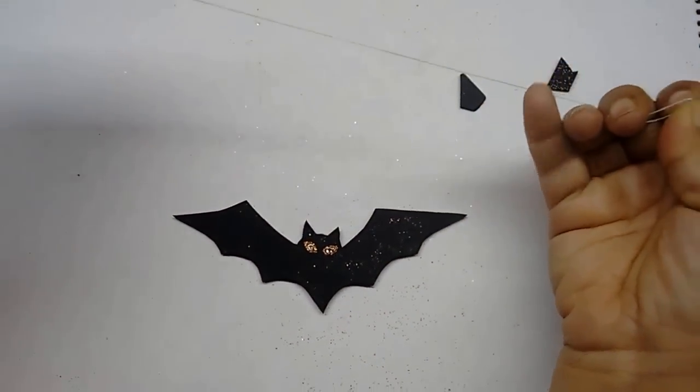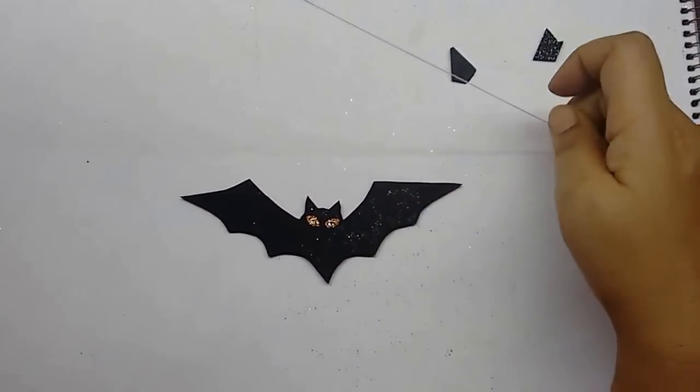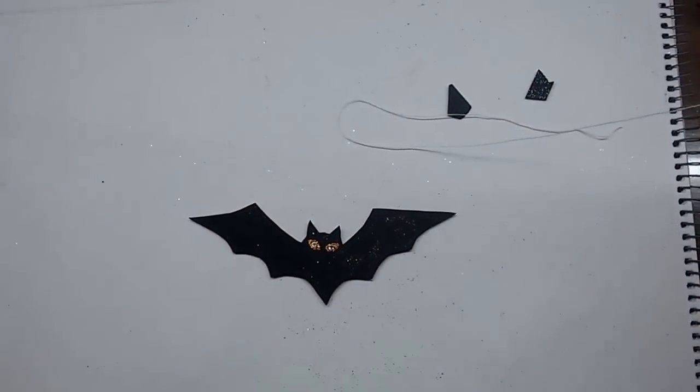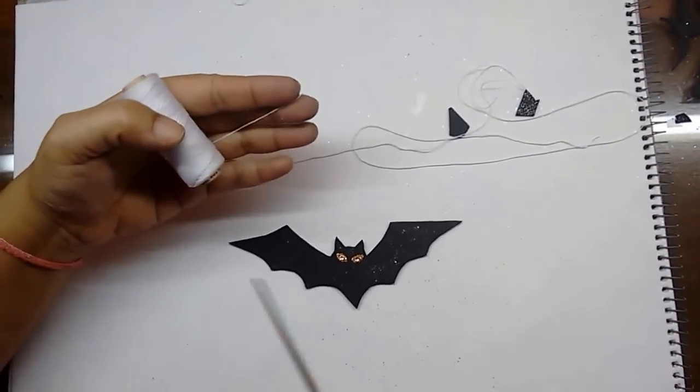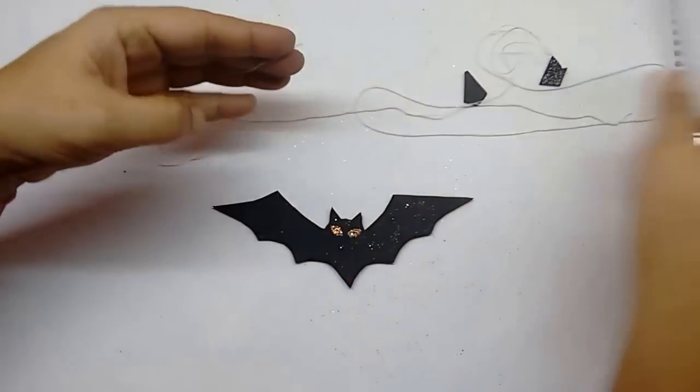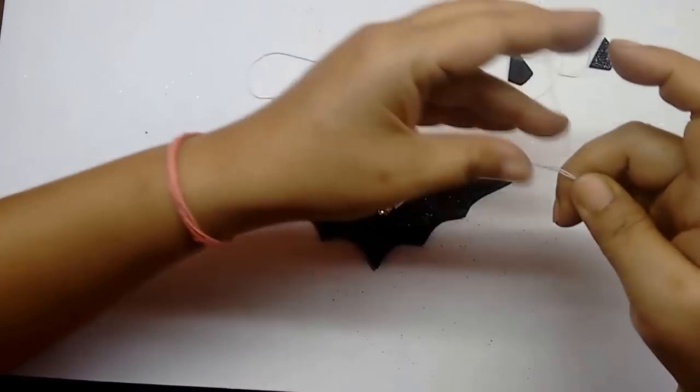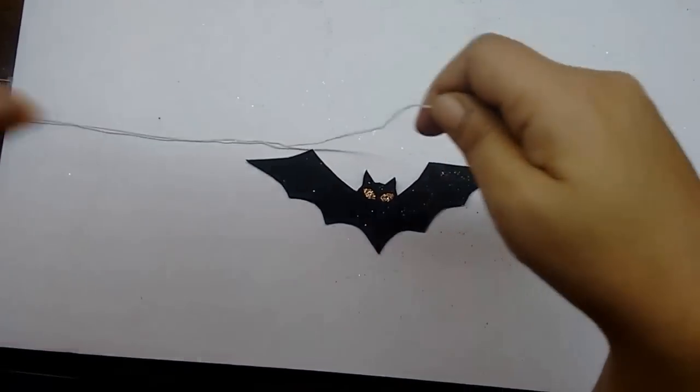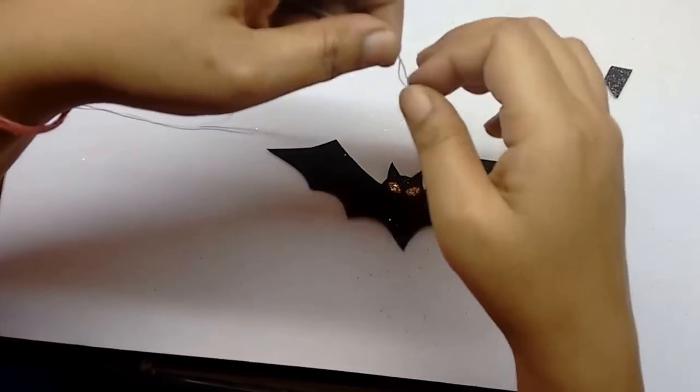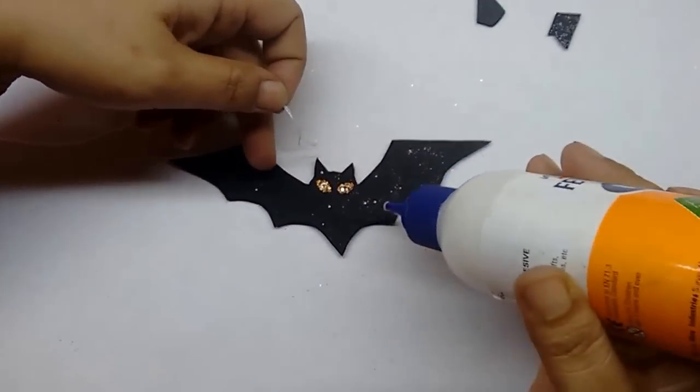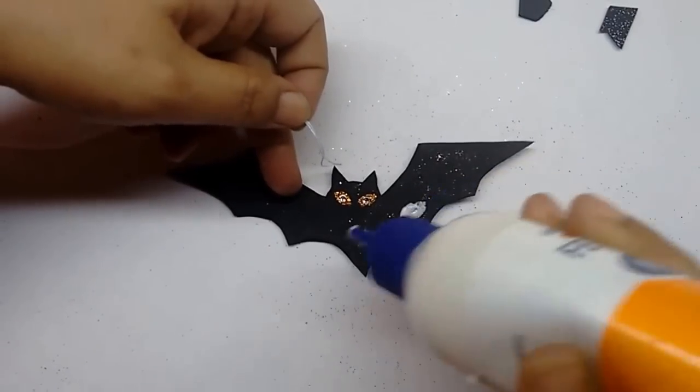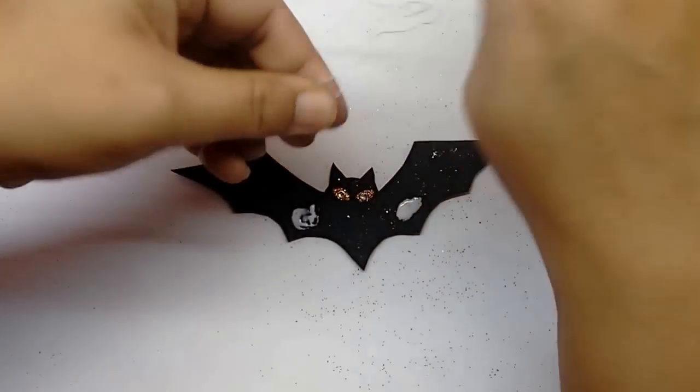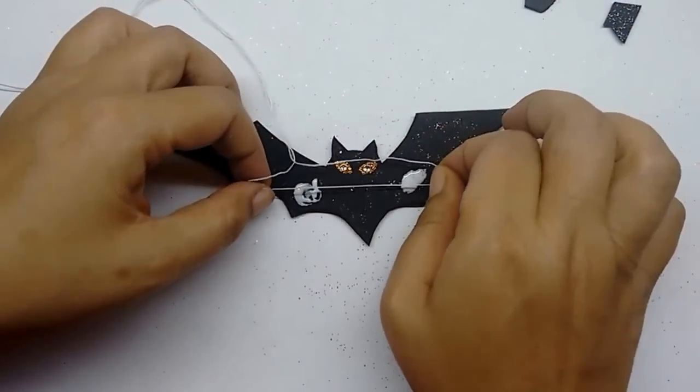Take a length of the thread, the length that you want the bat to hang. Take a piece of foam and double it. Cut it out. Take the midpoint of this thread. And then apply glue on the bat in two places—take a piece of foam—on the wing. Take the thread, open it out a bit, and stick this on the two places.